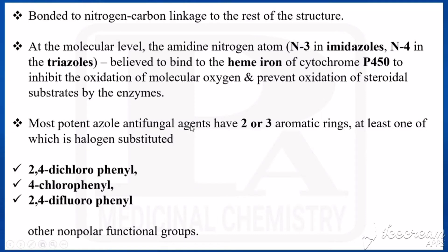The most potent azole antifungals should have 2 to 3 aromatic rings — having these rings makes the compound more potent. At least one of these rings should be halogen-substituted. That may be 2,4-dichlorophenyl, 4-chlorophenyl, or 2,4-difluorophenyl, along with other non-polar functional groups.